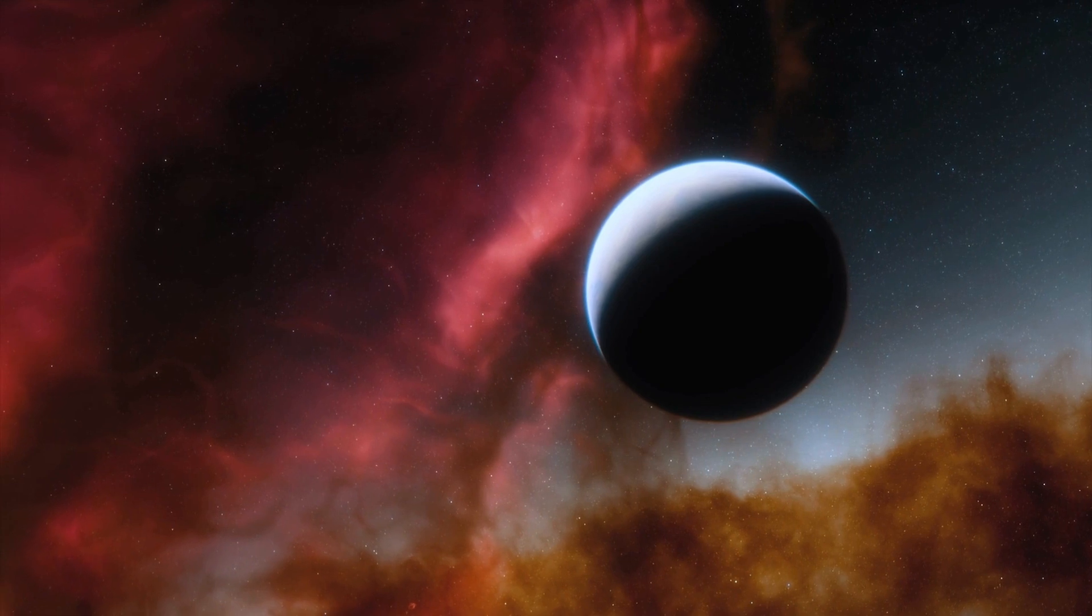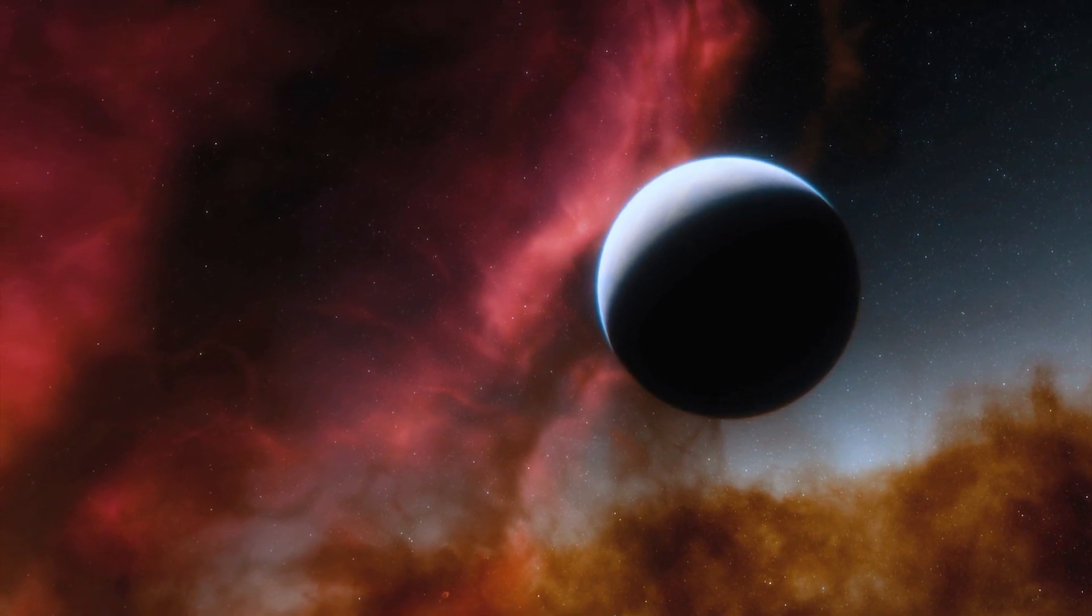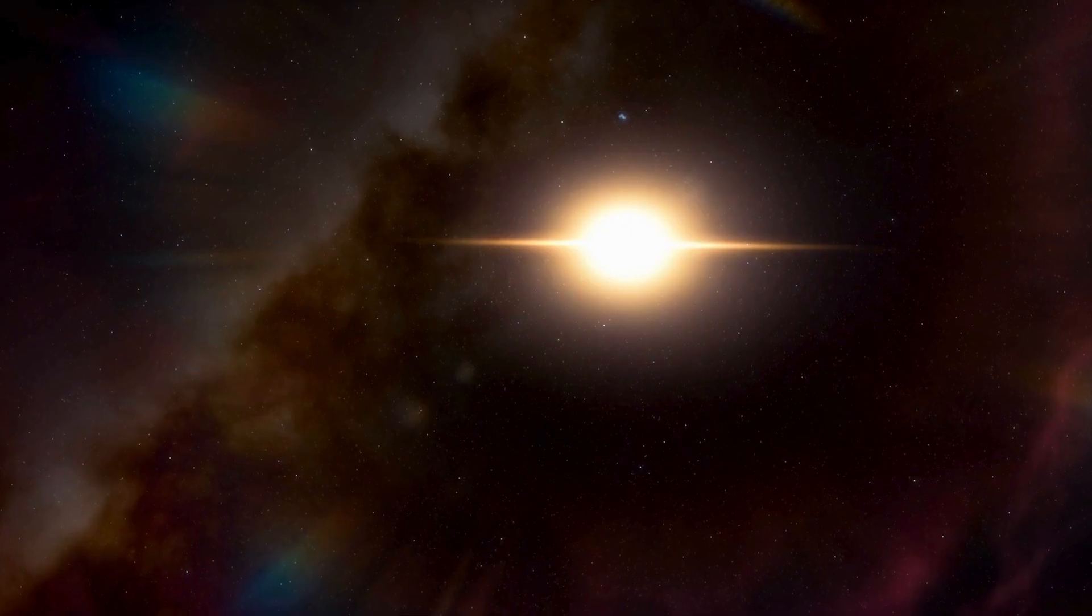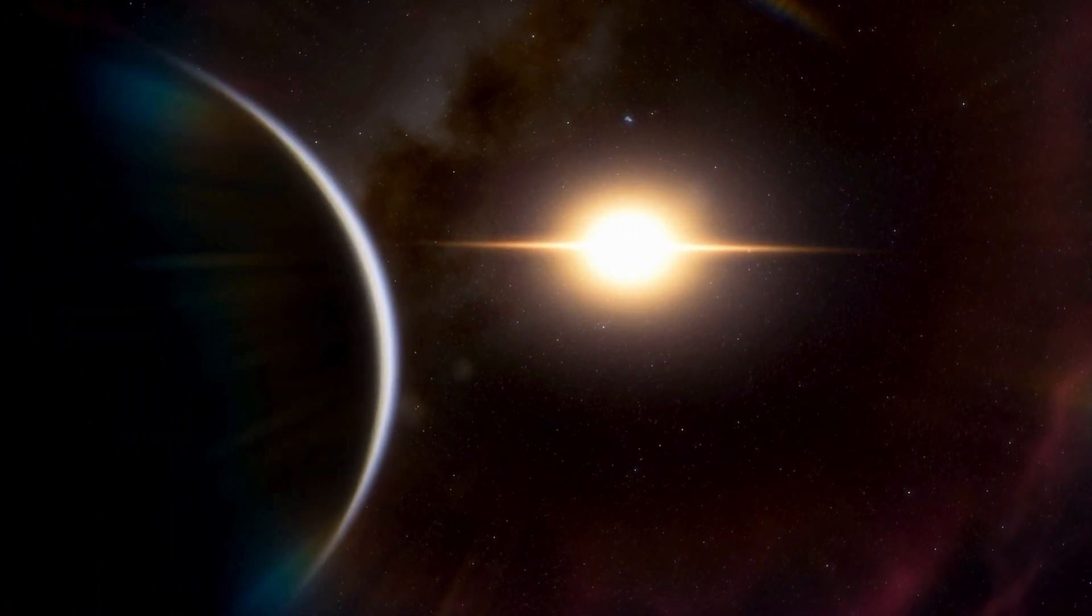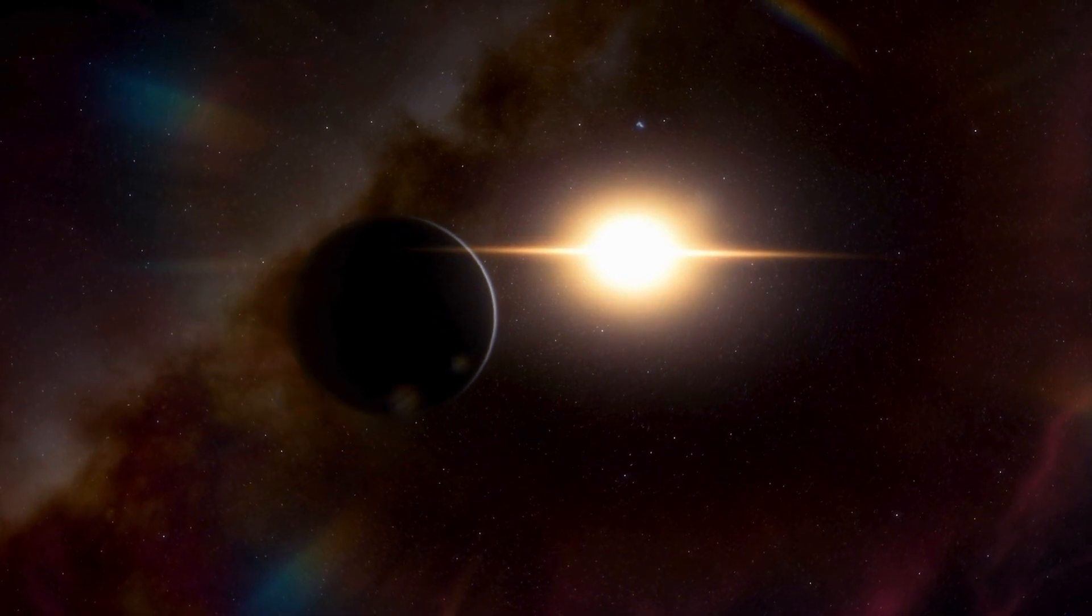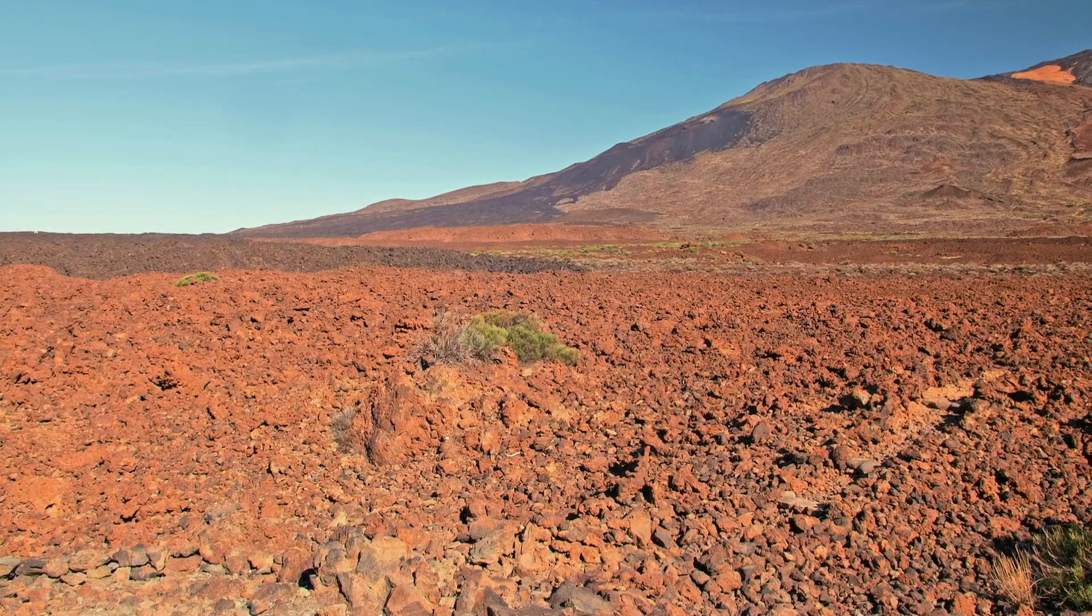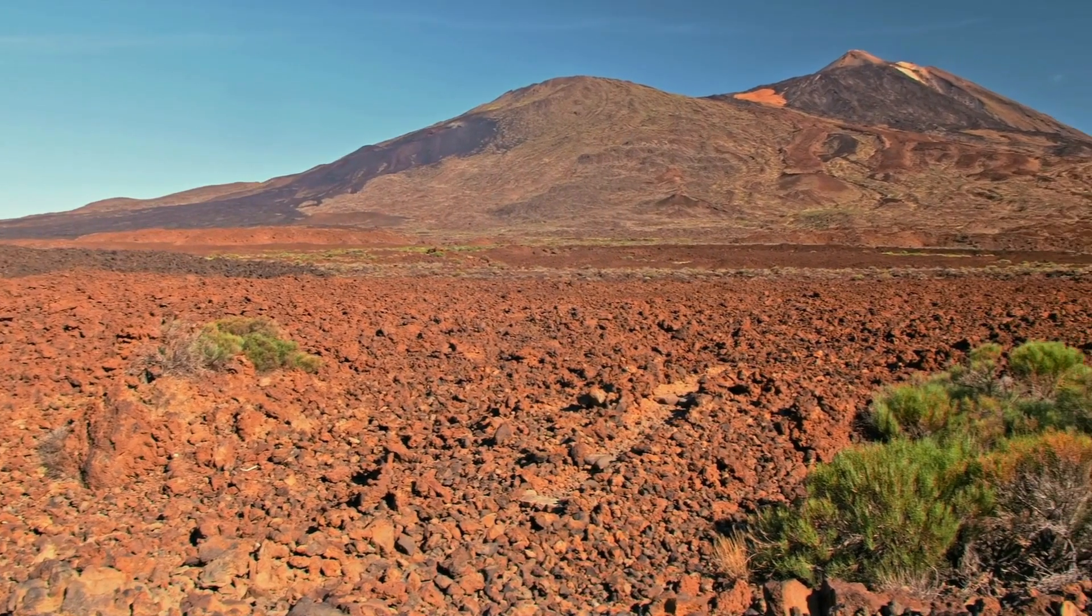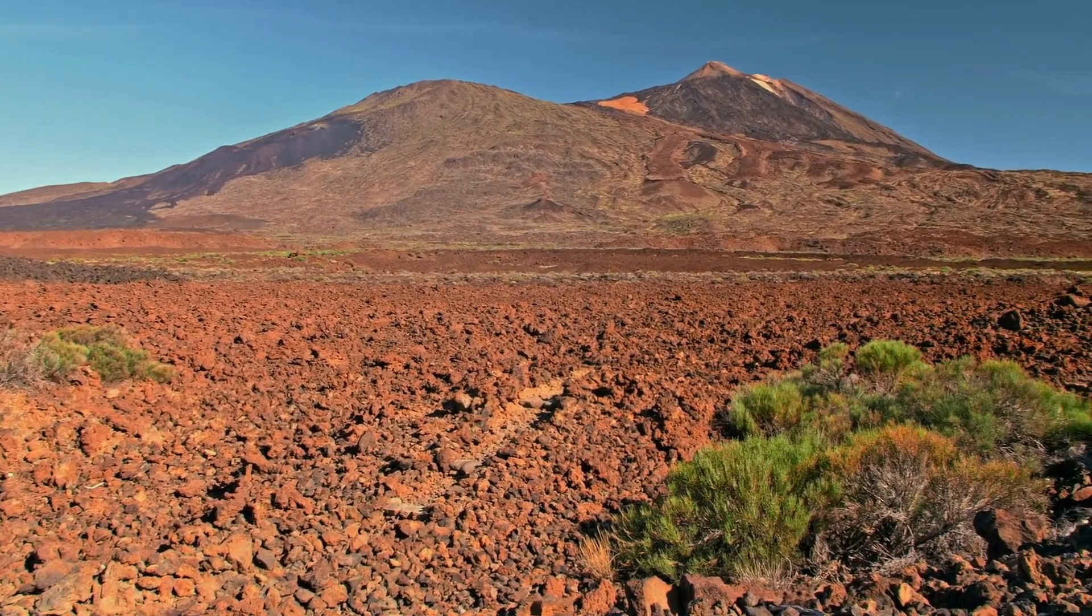As we venture beyond our solar system, we discover a whole new world of exoplanets, planets that orbit stars other than the Sun. With 2,006 billion stars in the universe, the possibilities of exoplanets are endless. Some exoplanets even roam free, untethered to any star like rogue travelers in space. But among them all, Proxima Centauri b stands out as a truly remarkable and enigmatic planet.